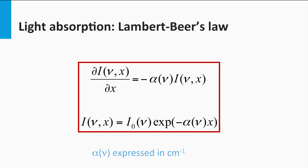Lambert-Beer's law shows that the light intensity is decreasing exponentially in the x-direction of the absorbing medium. It also means that at the side at which the light is entering the film, more light is absorbed relative to the back side. The total light intensity absorbed in the material is equal to the light intensity entering the absorber layer minus the intensity transmitted through the absorber layer.